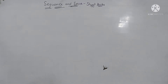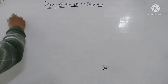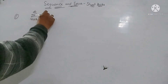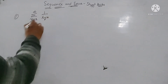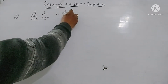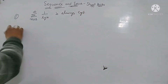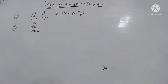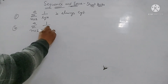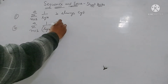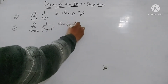Now let us take some very very important results. Number one: any series where n varies from 2 to infinity of the form 1 upon log n is always divergent. Second: the series n varies from 2 to infinity of 1 upon (log n) raised to power P is also always divergent.